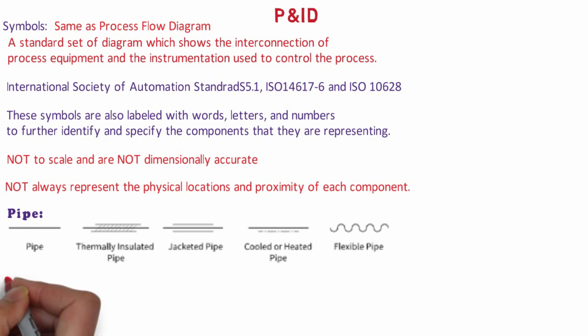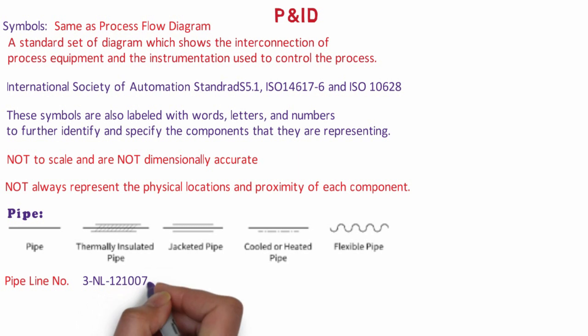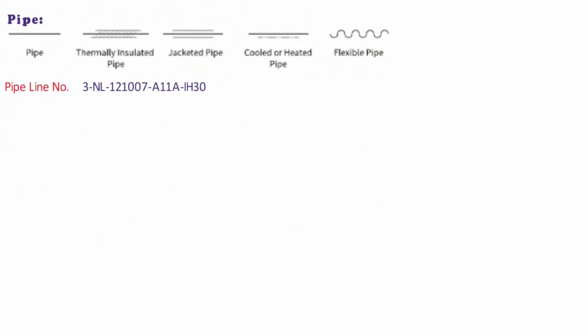On a P&ID, each line will be labeled with a line number. For example, 3 inches dash NL dash 121007 dash A11A dash 1H 30. Now each of these components or parts have their own significance in the line number.